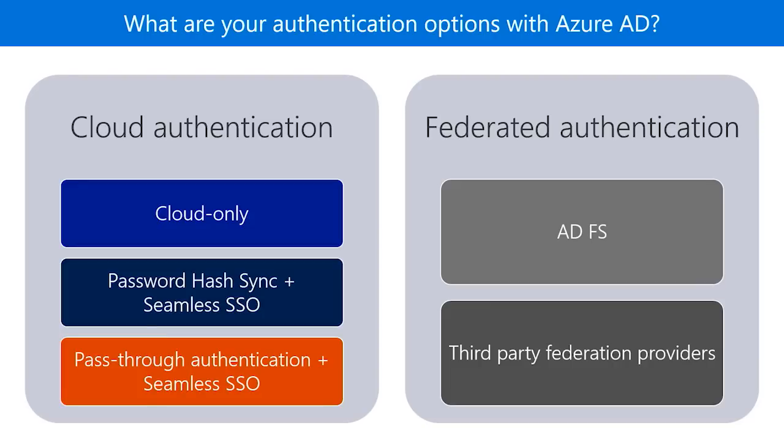The second option is password hash sync. In this case, users can actually sign in to cloud-based applications using the same usernames and passwords that they use with their on-premises active directory. In addition, password hash sync also provides user and password protection. Seamless single sign-on is a complementary feature. We'll talk about that a little bit later on in this video.